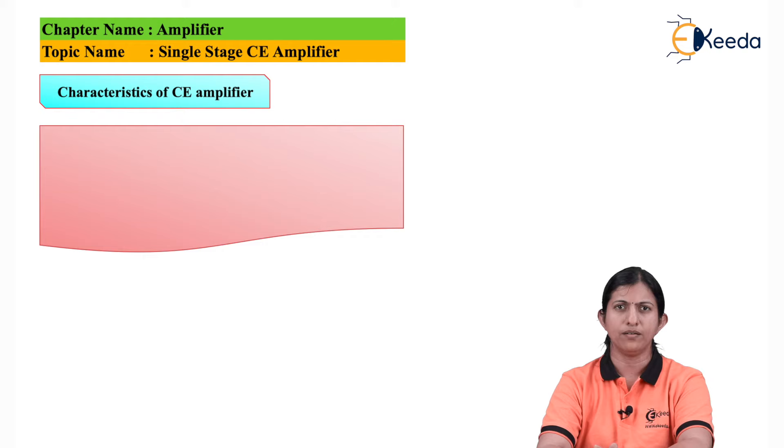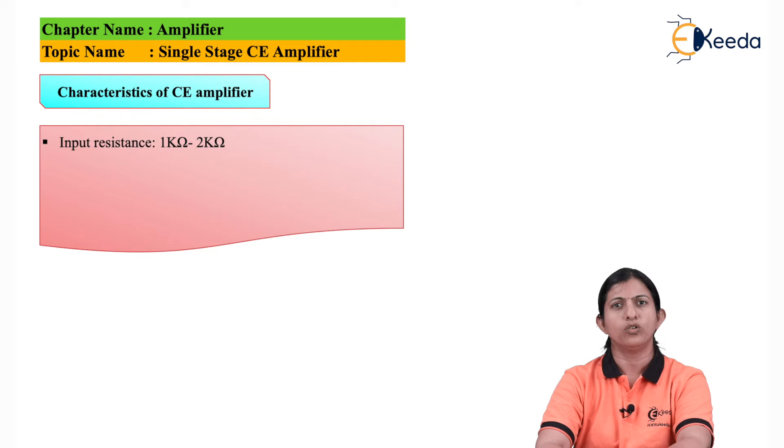We will discuss the characteristics of the common emitter amplifier. The first characteristic is input resistance. Input resistance is 1 kilo ohm to 2 kilo ohm, which is moderately low. The output resistance is 50 kilo ohm, which is moderately high resistance value.